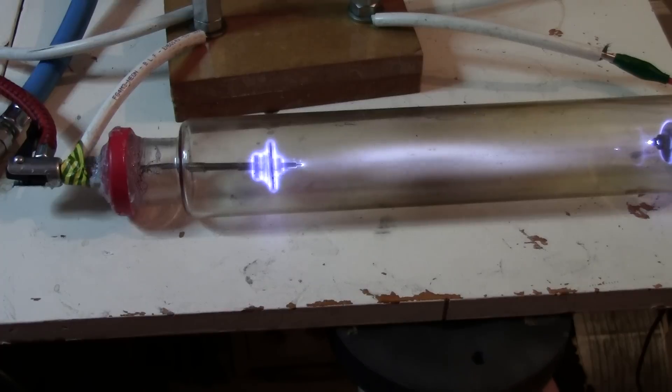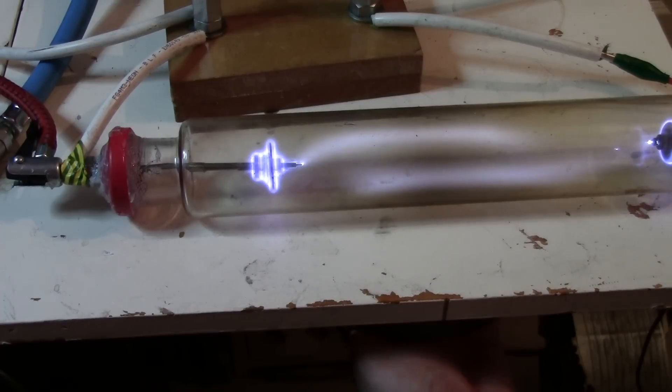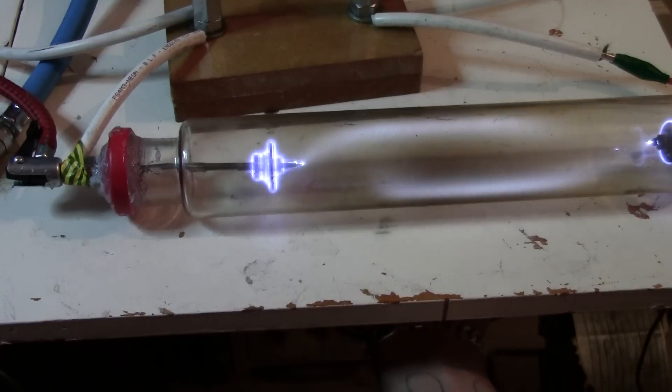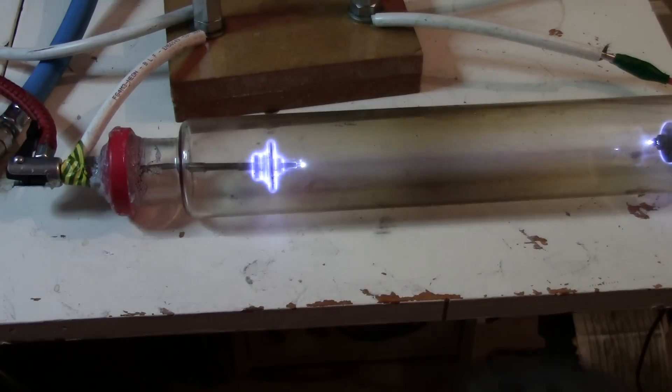So yeah, basically that is how, I can also turn the magnets a bit. That is how the arc can be manipulated with a magnet. So there you go, I hope you enjoyed that, thanks for watching.